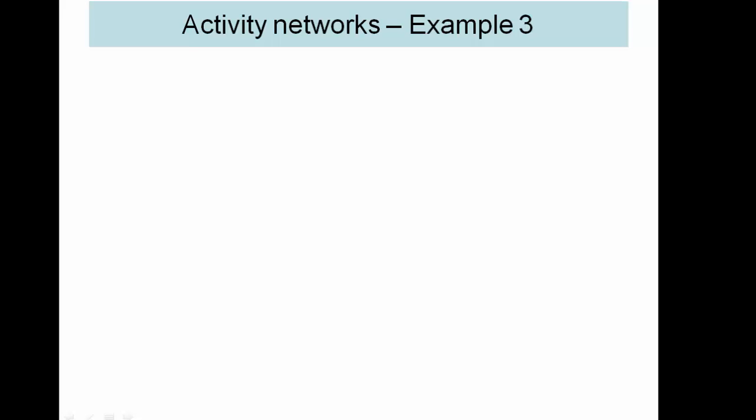This video carries on from Activity Networks Example 2. It's the third video on Critical Path Analysis, Decision 2 that I've made.